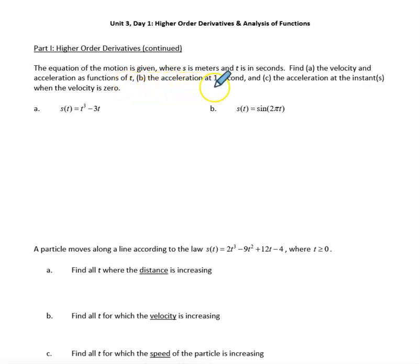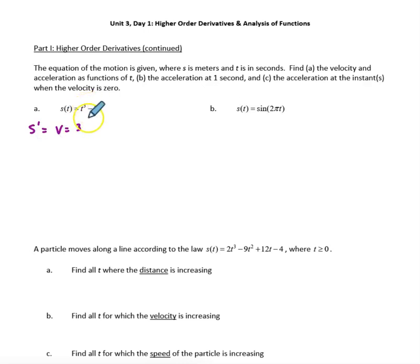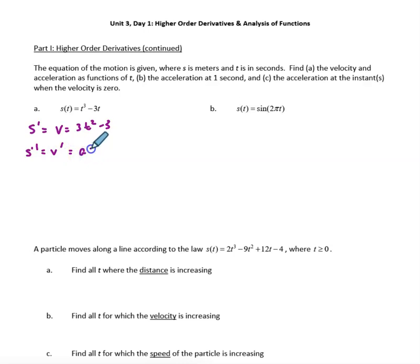Then evaluate the acceleration at one second, and finally evaluate the acceleration at the instant when velocity is equal to zero. Taking s prime, which equals velocity — the derivative of position — we get 3t squared minus 3 using the power rule. Then s double prime, the second derivative of position, is the first derivative of velocity, which equals acceleration, giving us 6t.